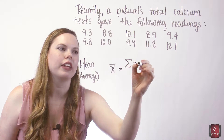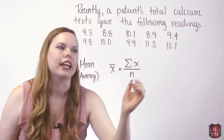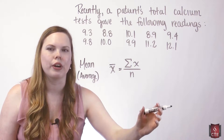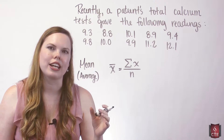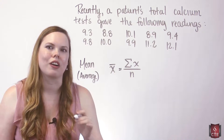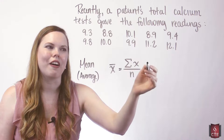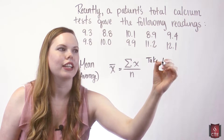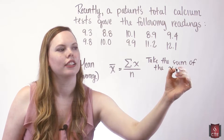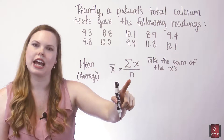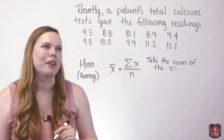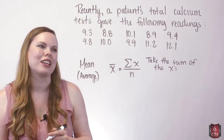We'll use sample notation for the mean, which is X-bar. The formula is equal to the sum of all the X's divided by n. This summation notation means take the sum of what follows it — here, the X's. In statistics, X's always represent our data values, so these 10 data values are X's. We divide by n, where small n represents our sample size. With 10 data values, our n is 10.